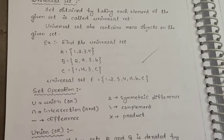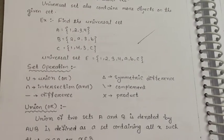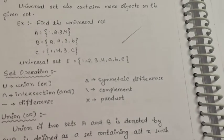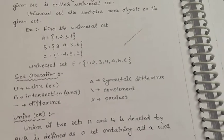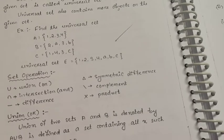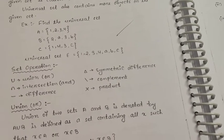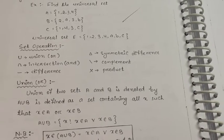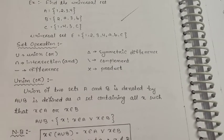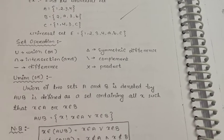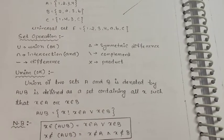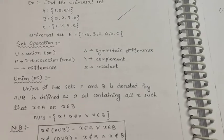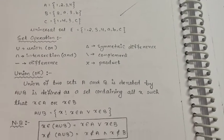Next, set operations which we have discussed: union, intersection, difference, symmetric difference, complement, and product. The union of two sets A and B is denoted by A union B, defined as the set containing all x such that x belongs to A or x belongs to B.